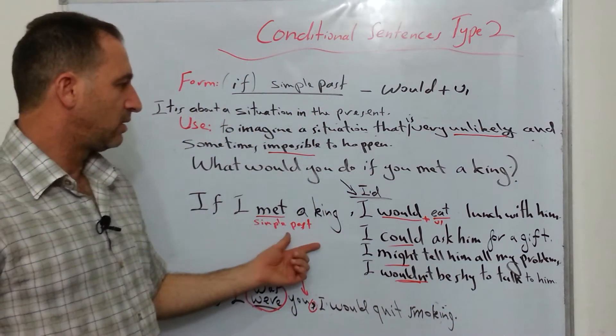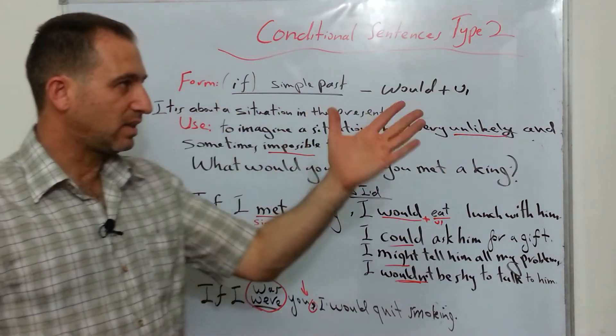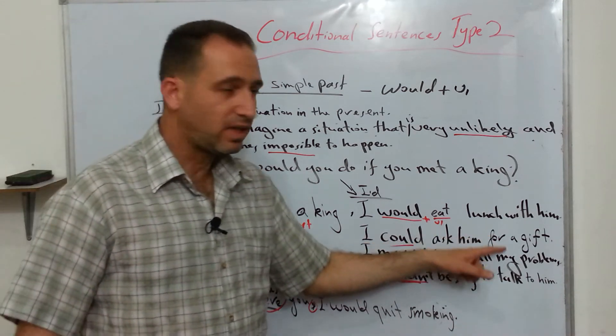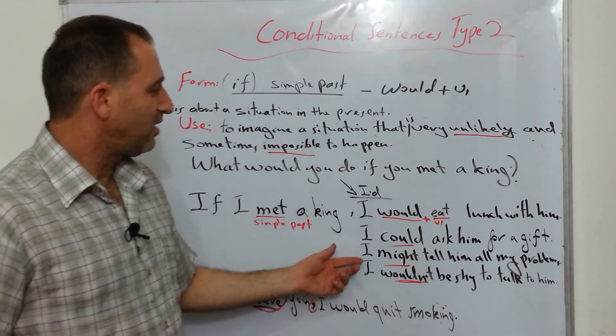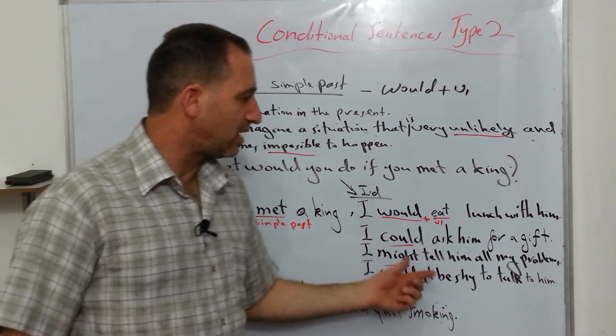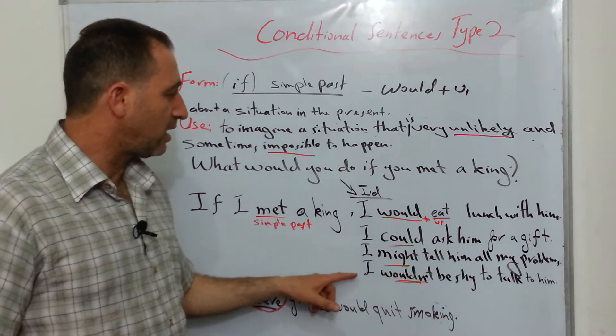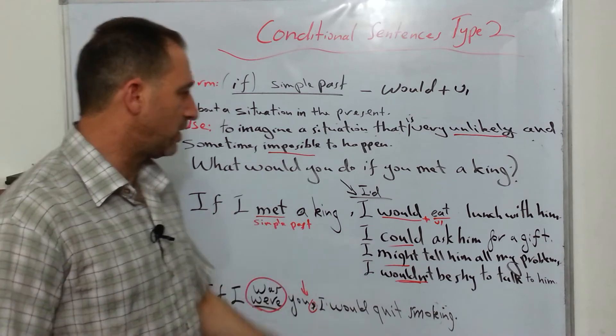So these are my examples again. If I met a king, I would eat lunch with him. I can see it clearly. It's a nice dream then. If I met a king, I could ask him for a gift, a big gift like a Ferrari. If I met a king, I might tell him all my problems. And if I met a king, I wouldn't be shy to talk to him. So these were all options.